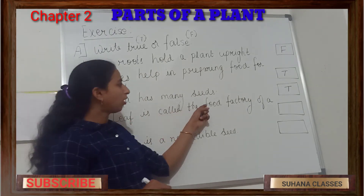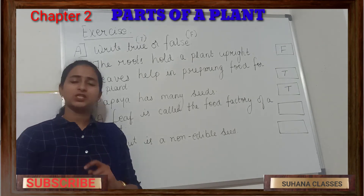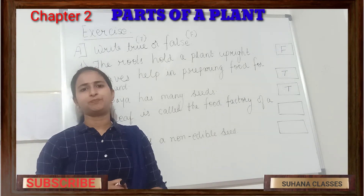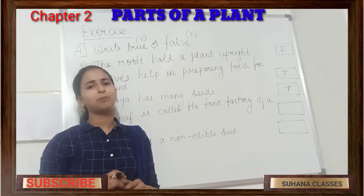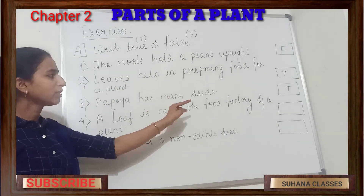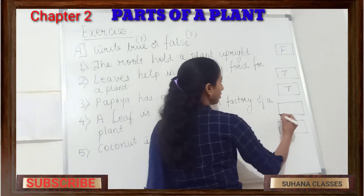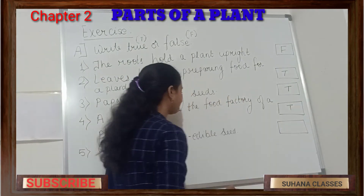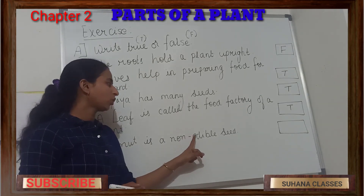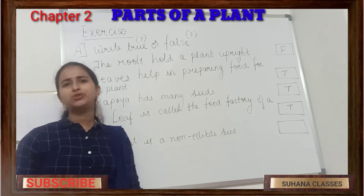Next: A leaf is called the food factory of a plant. Food factory means the place where food is prepared. Leaves are the place where food is prepared, so they are called the food factory of a plant. This statement is again true.